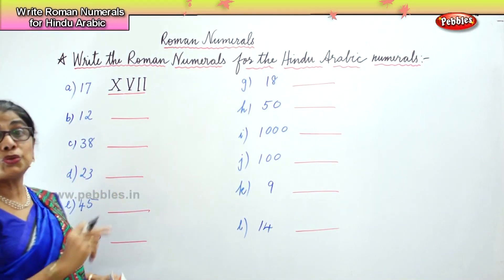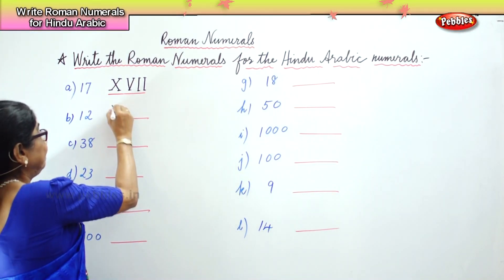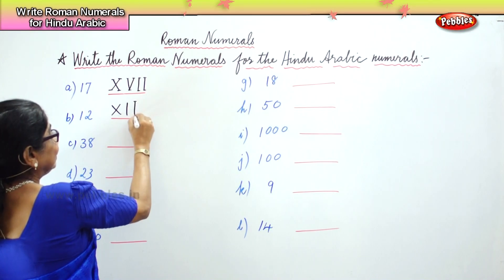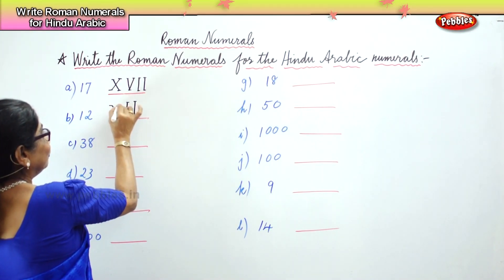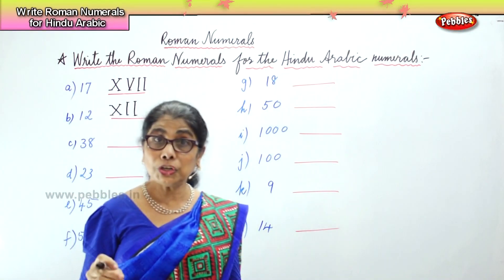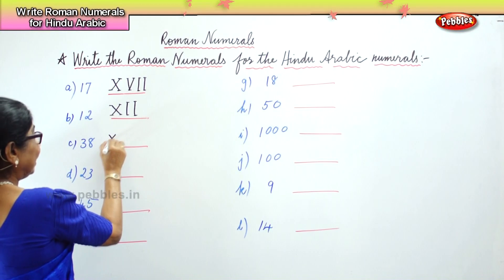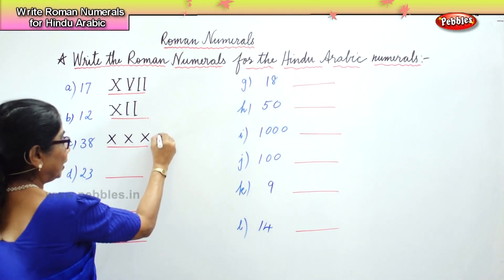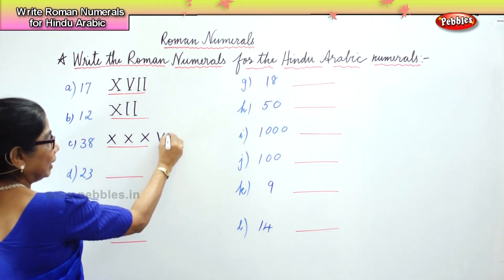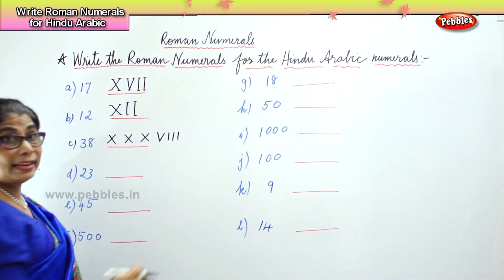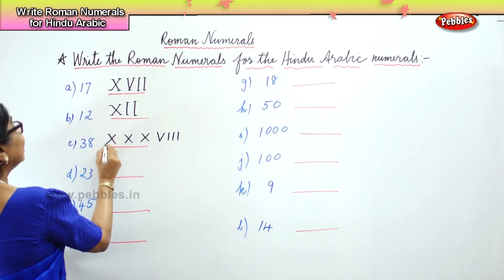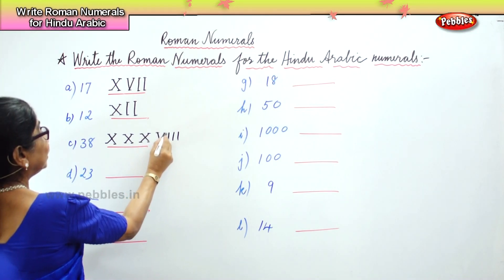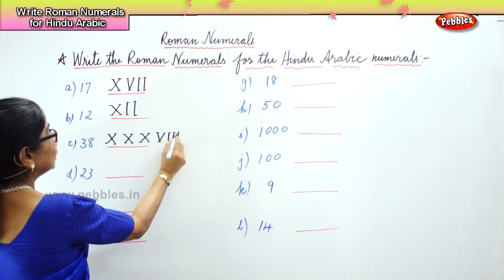The next we have here is 12 — 10 and 2: 10, 11 and 12. Very good. Next we have 38. 30 — you know to write 10, 20, 30 — then 35, 36, 37, 38. Very good, so you got 38.